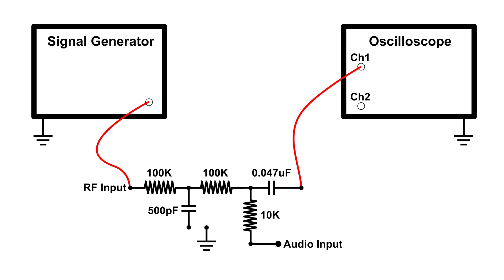Knowing about capacitive reactance can be very useful in detector circuits of AM radios and FM radios. Quite often, capacitors are chosen to remove unwanted RF signals from the audio signal. Here is a circuit I'm going to use to demonstrate this: we've got our generator set to output RF, going through a 100k ohm resistor and another 100k ohm resistor, audio through a 10k ohm resistor, all going to channel one of the oscilloscope.